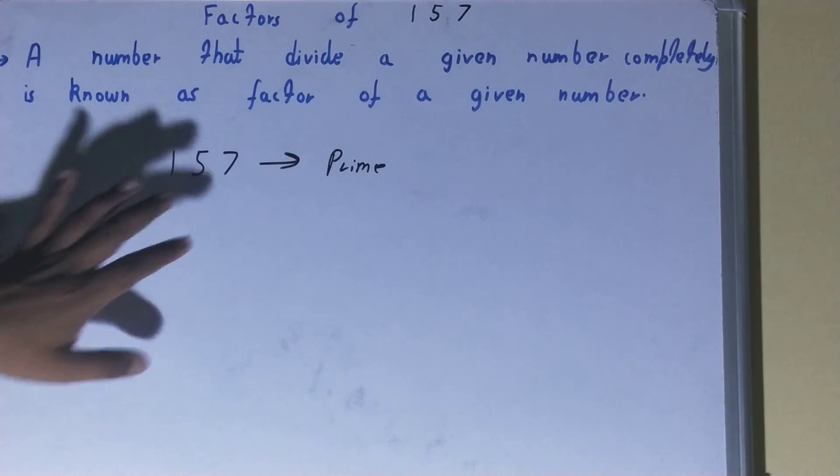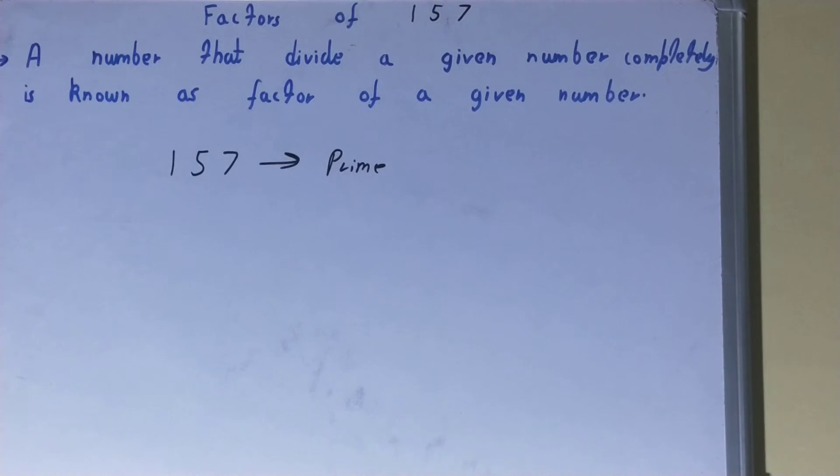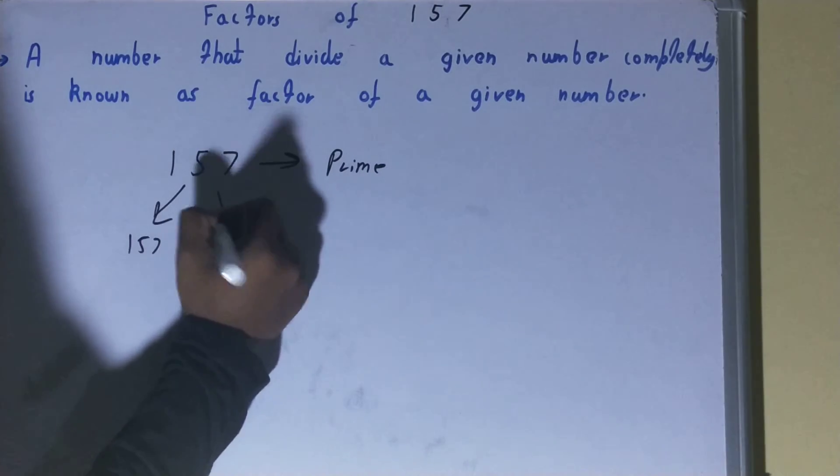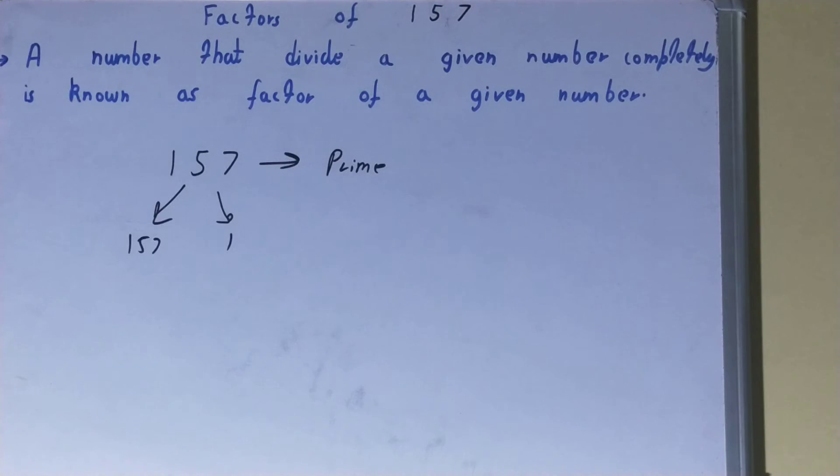Now because 157 is a prime number, it also has that property that it is divisible by itself, that is 157, and 1. And no other number can divide this 157. So the factors of the number 157 will be 157 and 1.